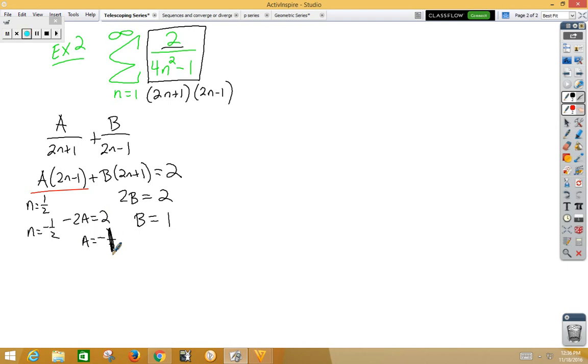Now we can rewrite this as a series from 1 to infinity: 1/(2n-1) - 1/(2n+1). This looks more like a telescoping series.